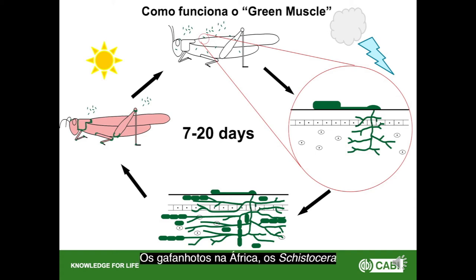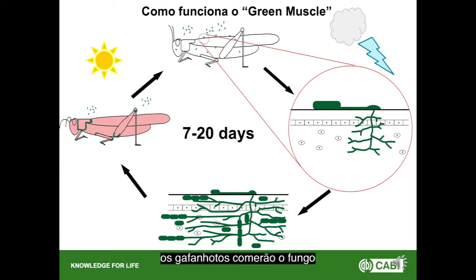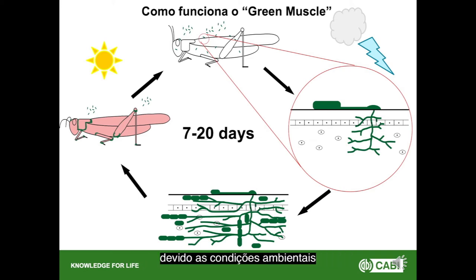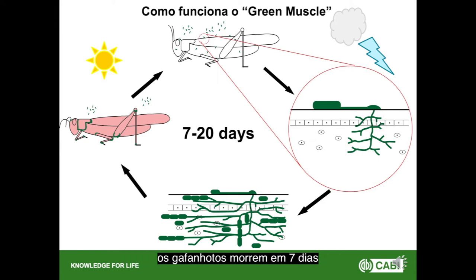Once inside the locust, the fungus grows using the locust's internal resources, and after seven to twenty days the locust dies. If environmental conditions are favourable — particularly high humidity — you get external sporulation, releasing spores to kill other locusts in what we call secondary recycling. The time to kill depends mainly on temperature: favourable conditions produce kill within seven days; less favourable conditions may take up to twenty days.